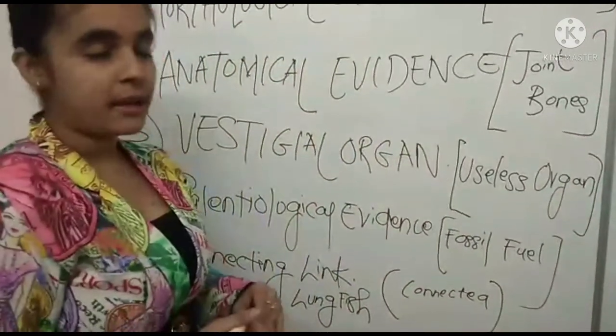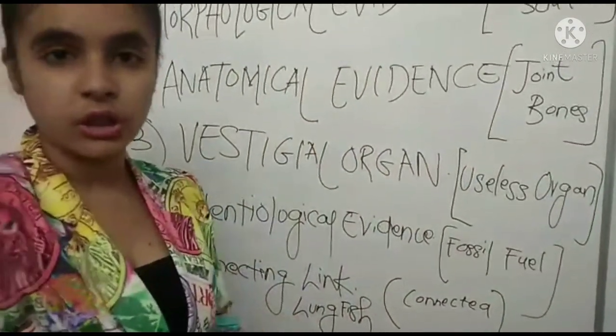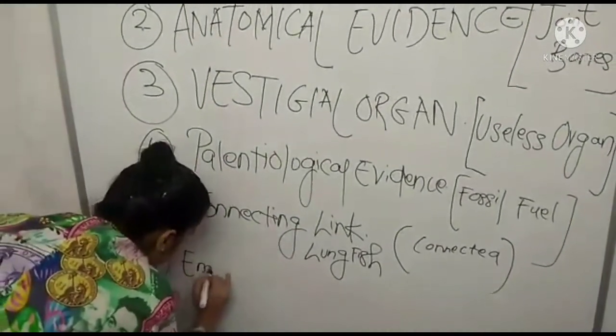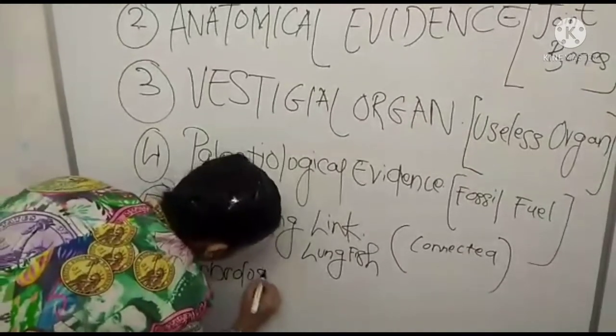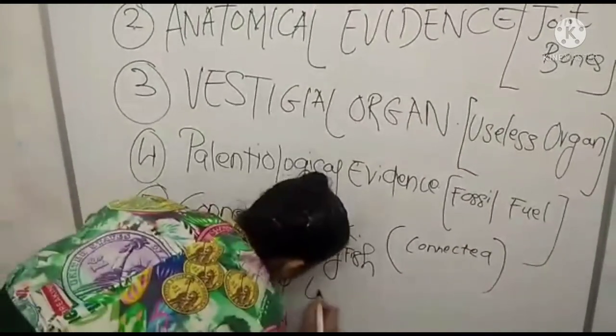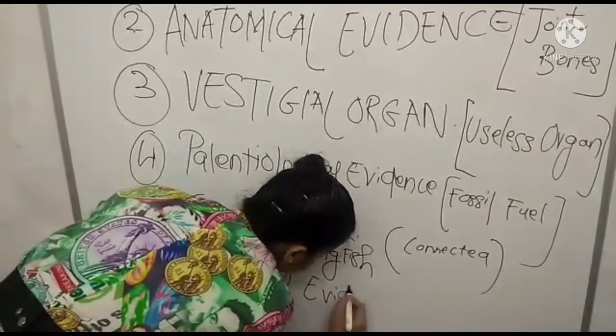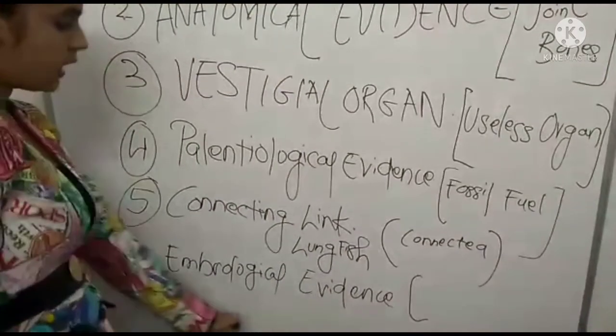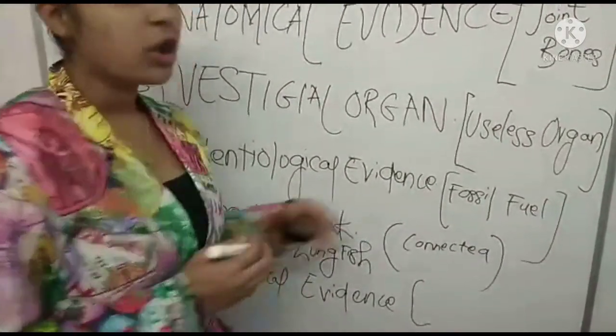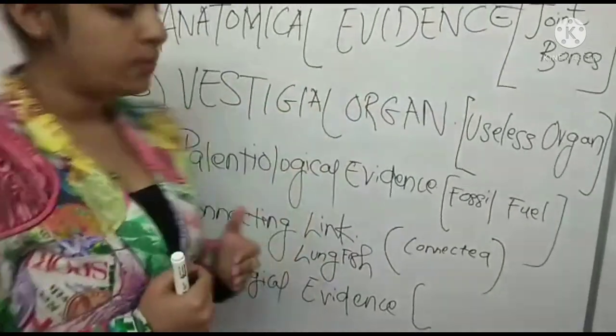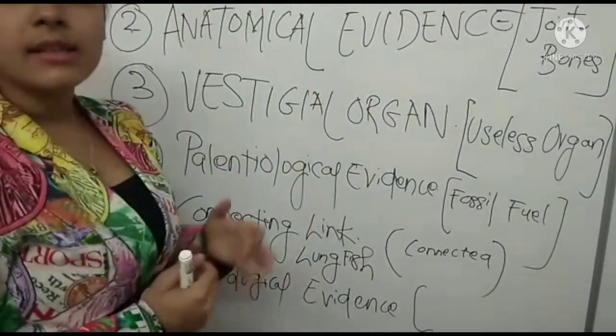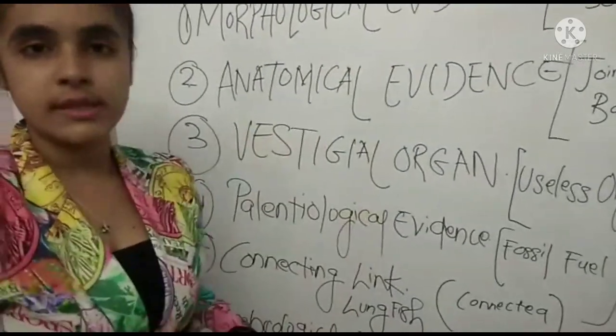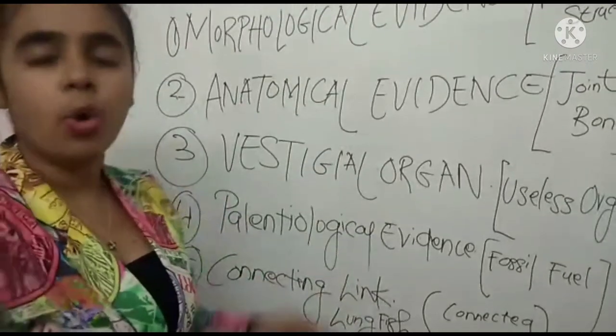And last and the final one is embryological evidence. In this evidence the picture which I will show you, you all can see that every animal in the initial stages they are almost the same. There are lot similarities in their whole structure.